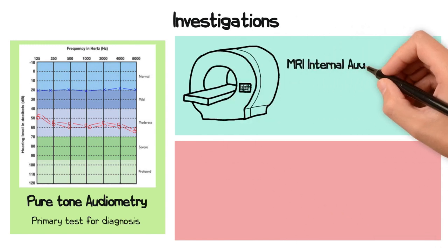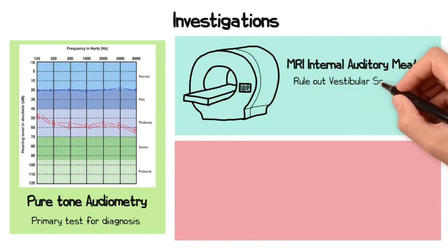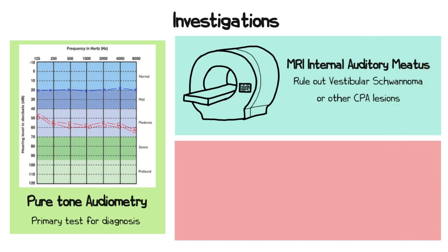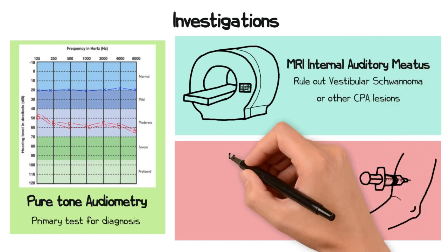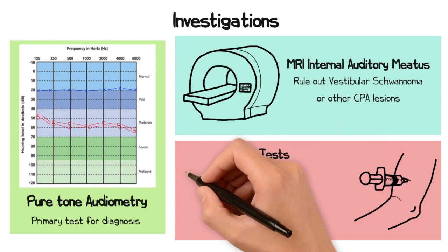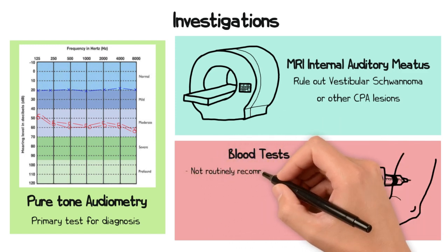An MRI scan of the internal auditory meatus is essential to rule out retrocochlear pathology, such as vestibular schwannoma or other cerebellopontine angle lesions. Blood tests are not routinely recommended unless a specific cause is suspected.